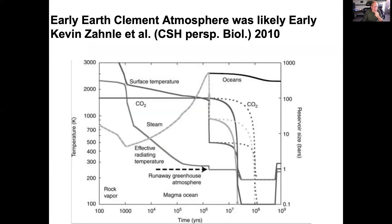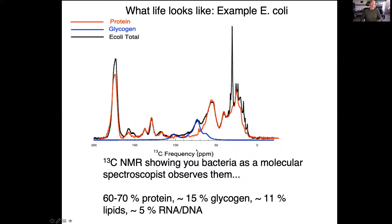A review by Kevin Zahnle concludes that developing a climate, atmosphere, and ocean on Earth was very likely. The accretion of Earth was a violent process that led to a magma ocean — an absolutely sterilizing event for any organic matter. Earth started essentially sterile after about a million years but with oceans, and Kevin suggests that within about ten million years the surface would have been quite temperate, even as the magma ocean continued crystallizing at depth.